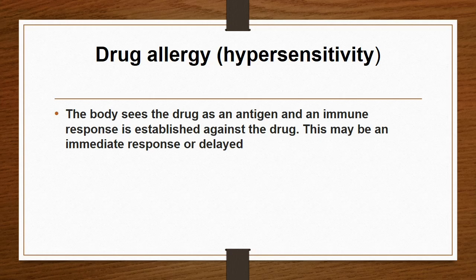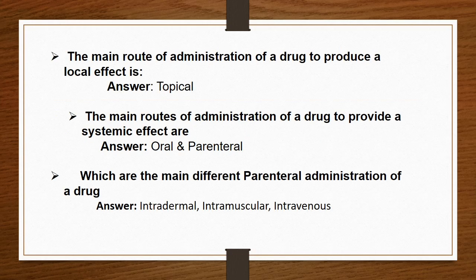What do you mean by drug allergy? The body sees the drug as an antigen and an immune response is established against the drug. This may be an immediate response or a delayed response. The main route of administration for a drug to produce a local effect is topical. The main routes of administration to provide a systemic effect are oral and parenteral, and the main types of parenteral administration are intradermal, intramuscular, and intravenous.